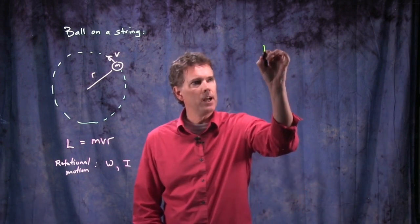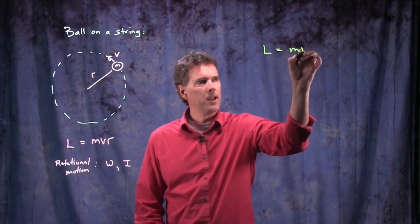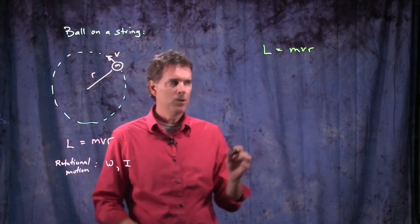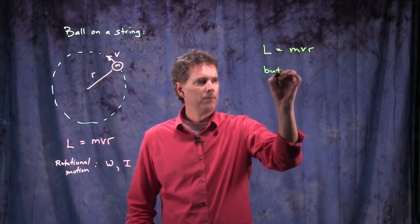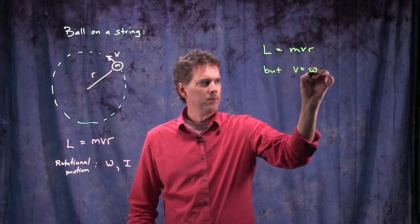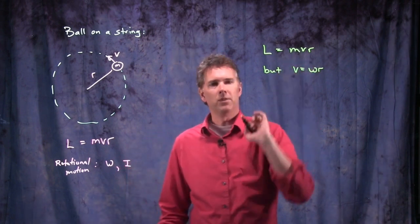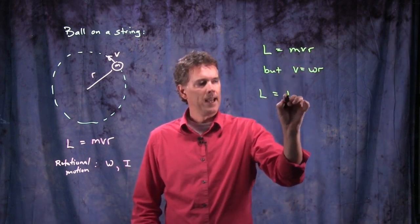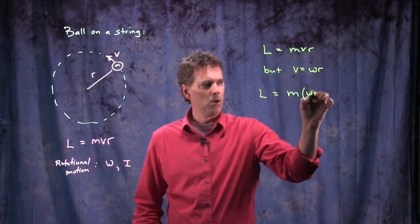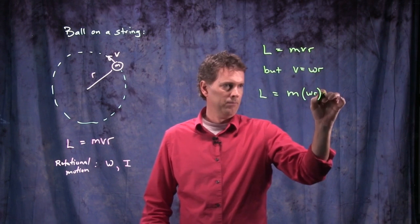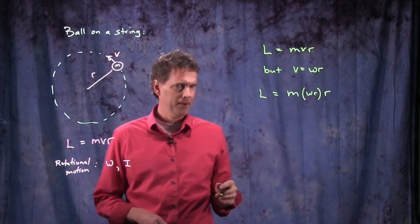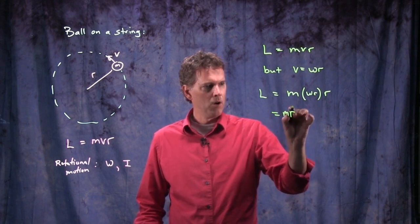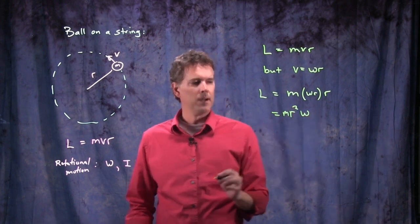Well if we have L equals mvr, I remember that v equals omega r. And so I can substitute that in to L and I get m times v which is now omega r, and I still have one more r hanging out there. So we can rewrite this as m r squared times omega.